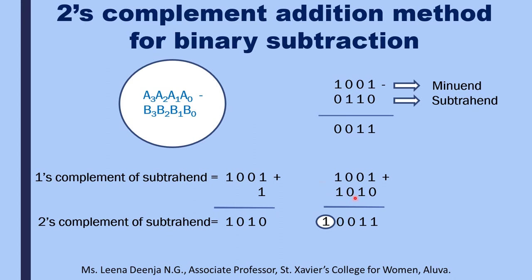Now we add this two's complement and the minuend together. Our minuend is 1001 and the two's complement of the subtrahend is 1010. Adding these: 1 plus 0 is 1, 0 plus 1 is 1, 0 plus 0 is 0, 1 plus 1 gives 1 with carry 1. Now discard this carry. Then we can see that our answer is 0011, which is the same as before. Therefore, for subtracting one binary number from another, we can add the two's complement of the subtrahend to the minuend and discard the carry.